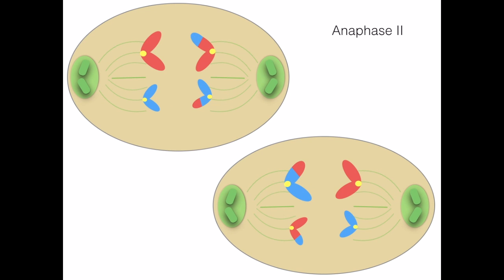The chromosomes split and the spindle fibers pull the chromosomes by the centromere to opposing sides of the cell during anaphase 2.